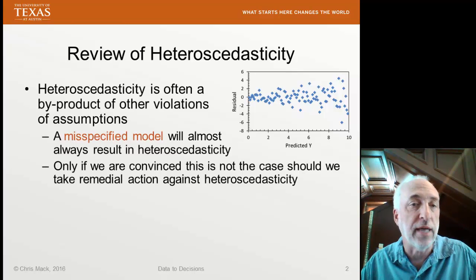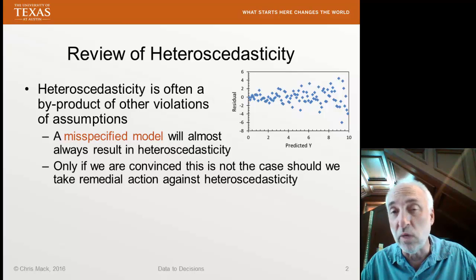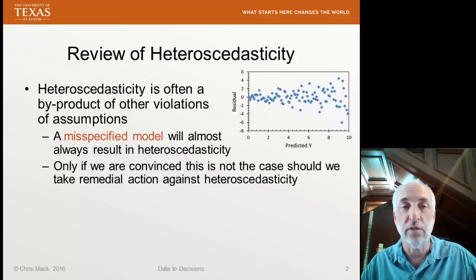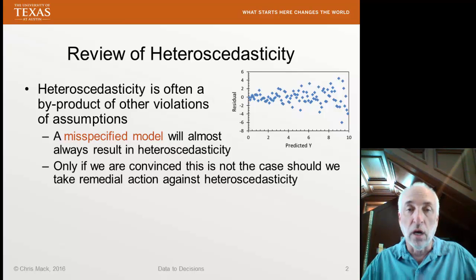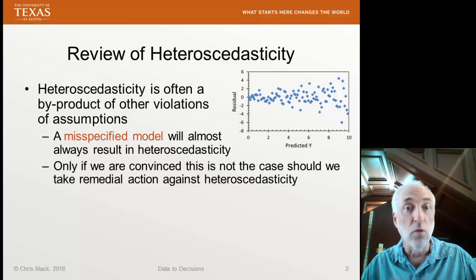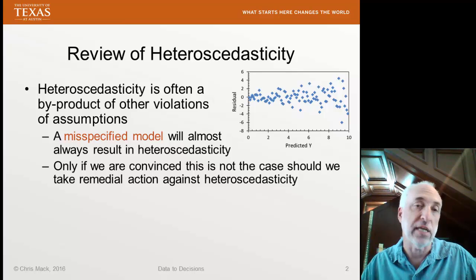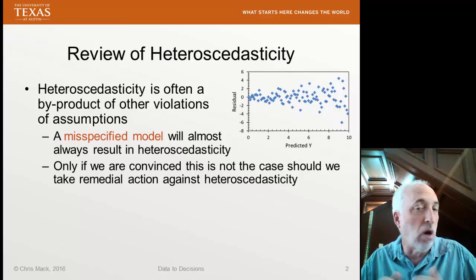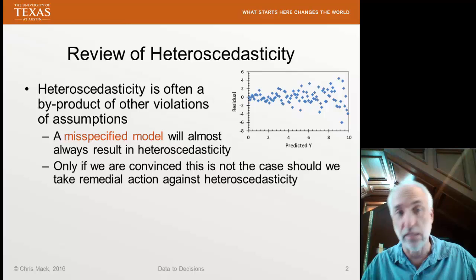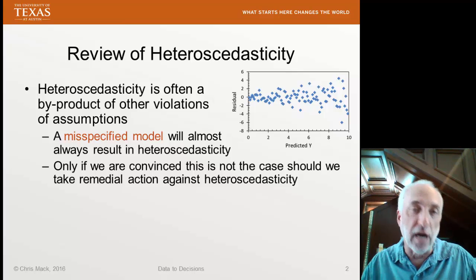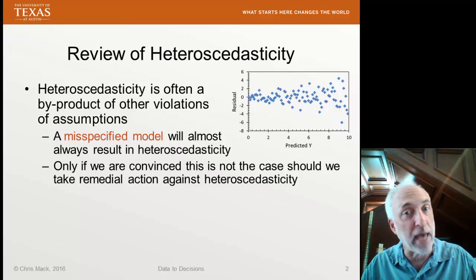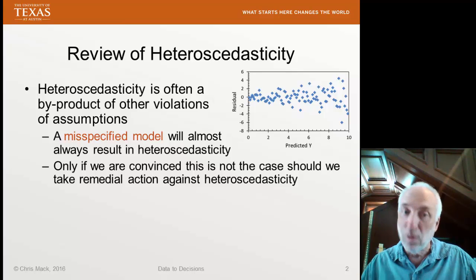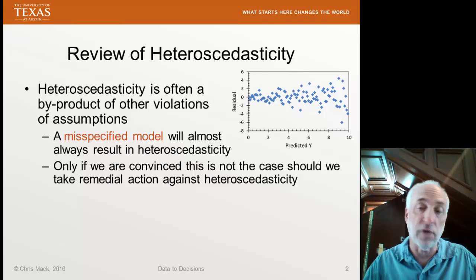To review, heteroscedasticity is caused by a number of things, but one of the most common reasons we see this change in variance as a function of the predicted y-value is that we have the wrong model. If you have the wrong model, you will get systematic variation in the residuals, which can show up in the presence of other noise — real random errors — as looking like heteroscedasticity. In fact, if you have the wrong model, almost every test for heteroscedasticity will show that it exists. So the first thing you want to do is be confident that you've got the right model, capturing all the systematic effects, with only random effects left over. Only when you're convinced of that should we start thinking about what we can do to fix the heteroscedasticity of our residuals.